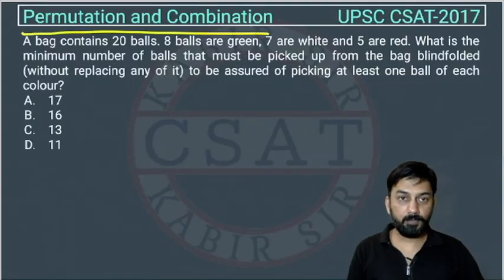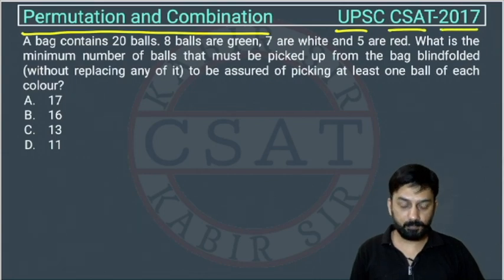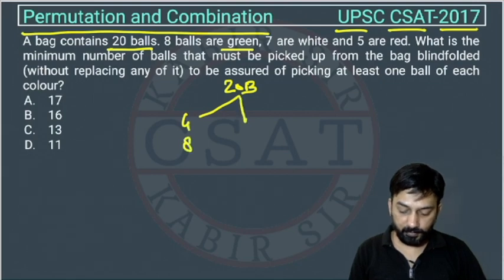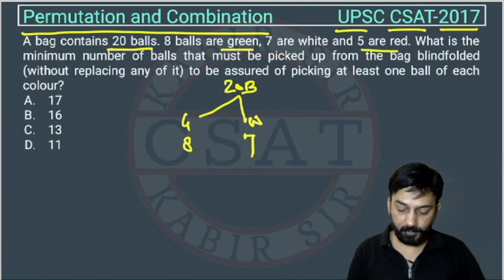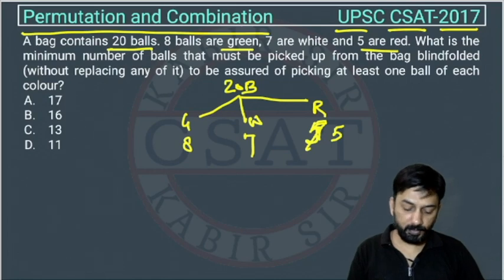This is a question from the permutation and combination chapter, asked by UPSC in the CSAT paper of 2017. A bag contained 20 balls: 8 balls are green, 7 are white, and 5 are red. What is the minimum number of balls that must be picked up from the bag blindfolded?